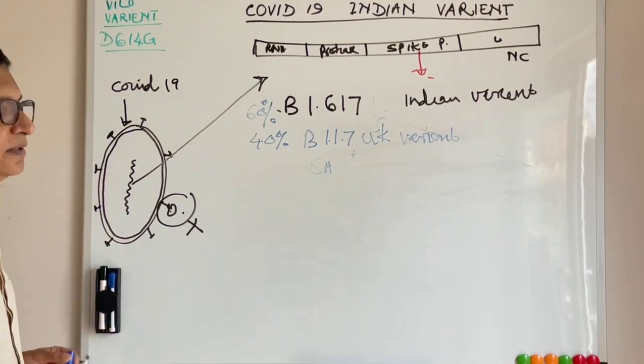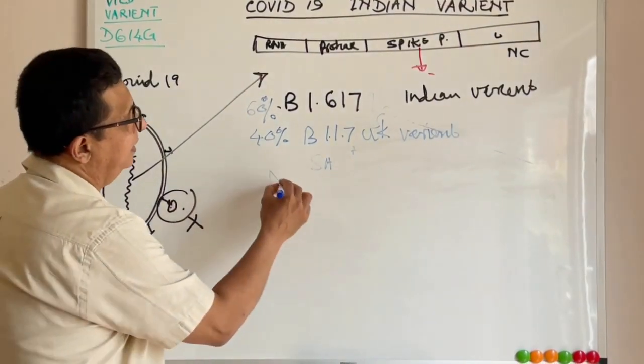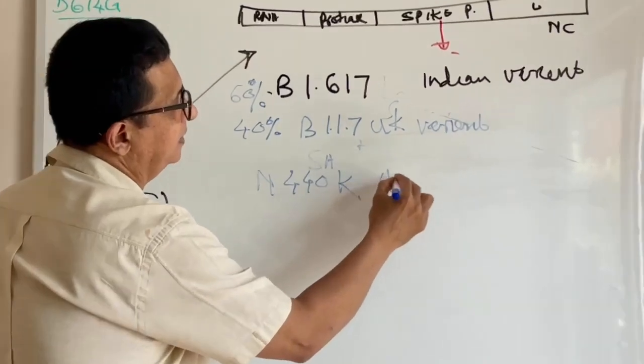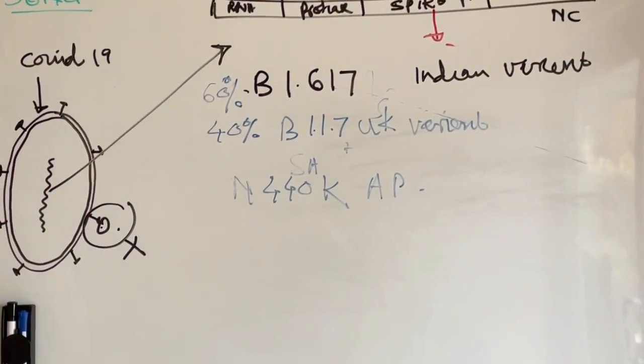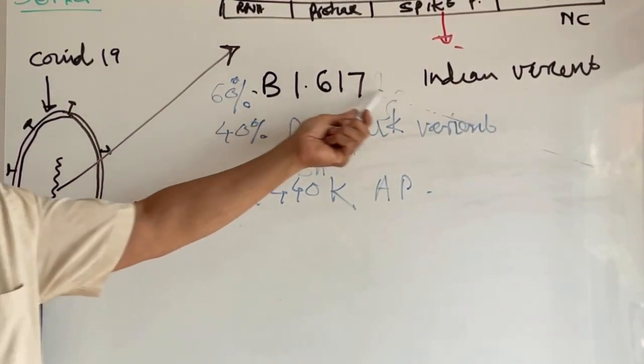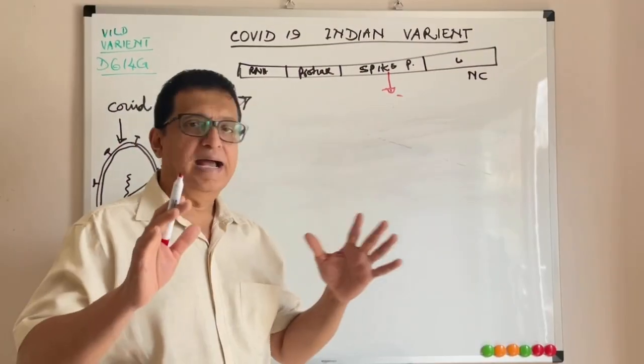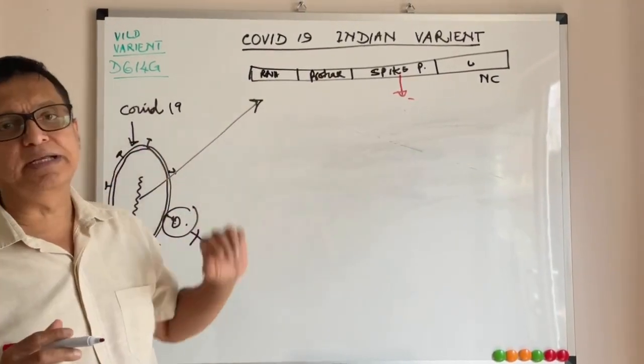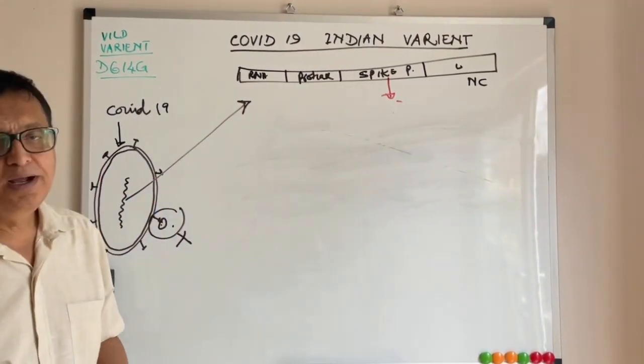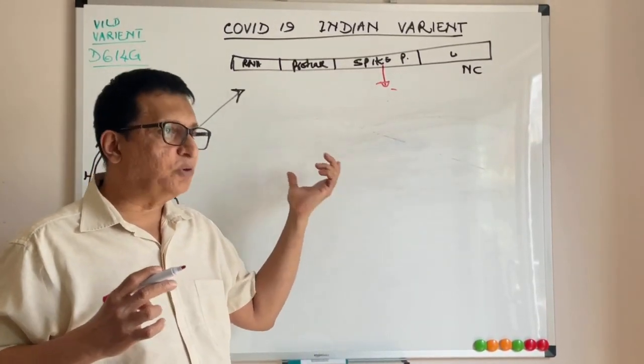Previously the prominent variant of South India was N440K, the Andhra Pradesh variant, and it is also being replaced by the UK variant and the Indian variant. As India is struggling with this Indian variant and the UK variant and the South African variant with this double mutation Indian COVID-19.